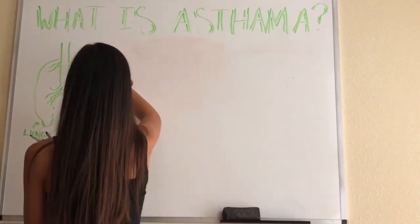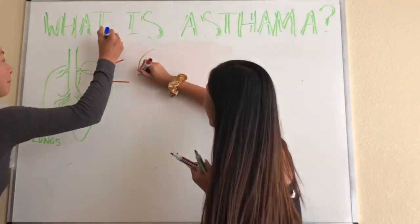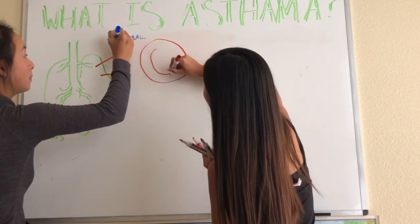Okay, so what is asthma? Asthma is a condition that occurs in the bronchioles. The bronchioles are little tubes inside the lungs.